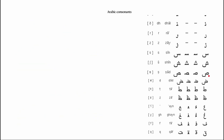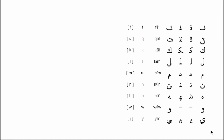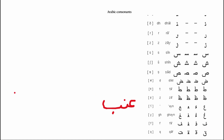Continuing the alphabet: dal, ra, zain, sin, shin, sad, dad, tah, dha, ain, ghain, fa, qaf, kaf, lam, meem, noon, ha, wow, ya. Let's practice with a word — 'anab,' which means grapes.